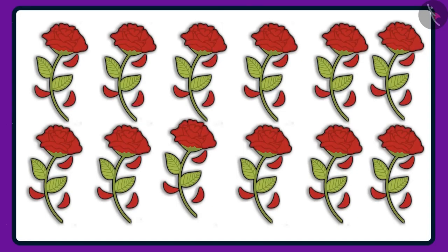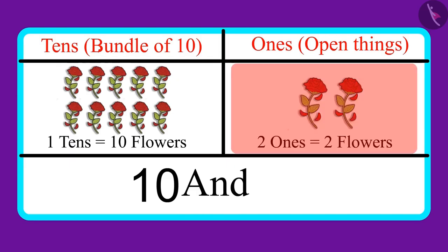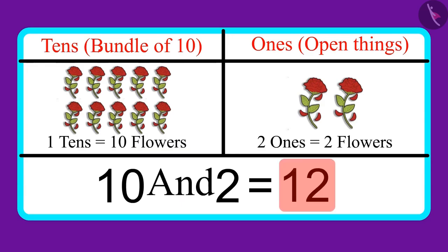Here are some flowers. There are one tens and two ones in the number. Can you tell me how many flowers are these? One tens means ten flowers, and two ones means two flowers. Ten and two, which means these are twelve flowers.